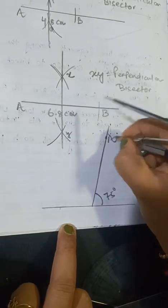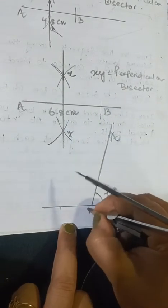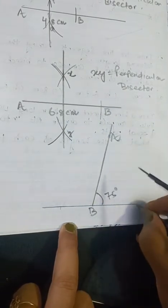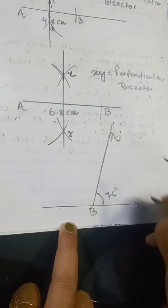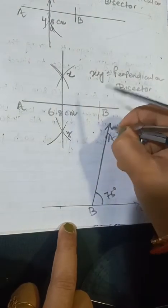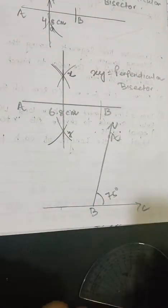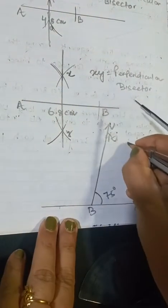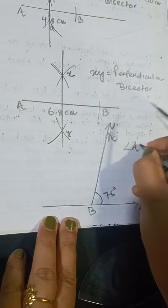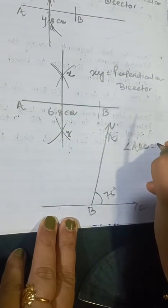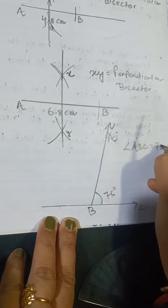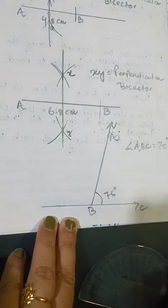Now label the points A, B, and C. Angle ABC is 75 degrees.